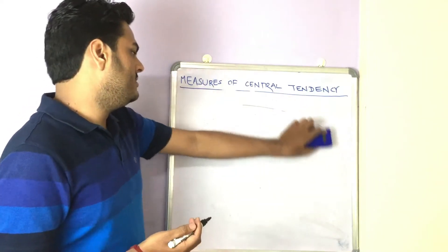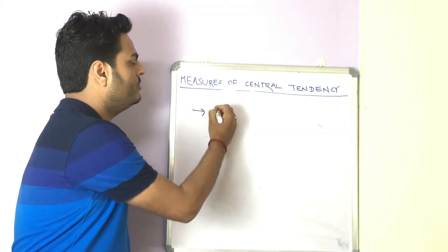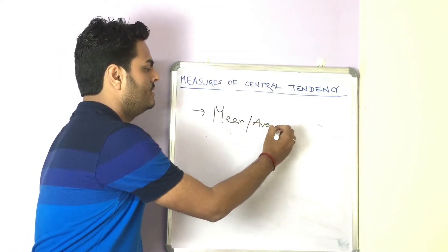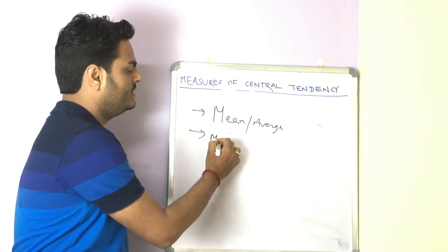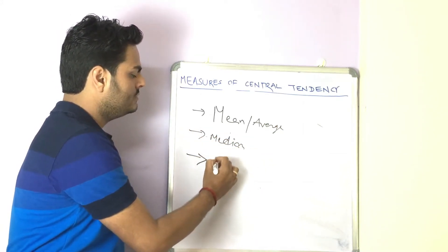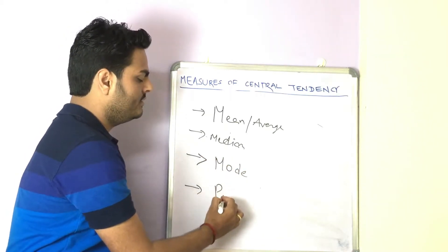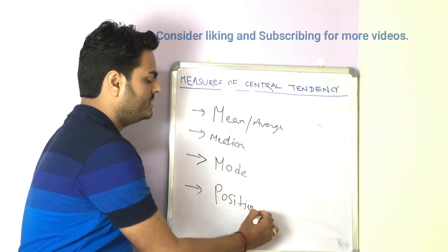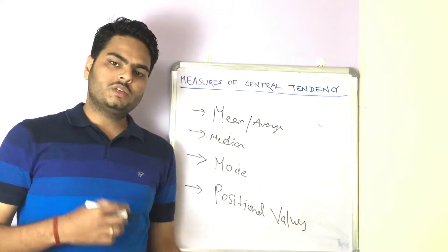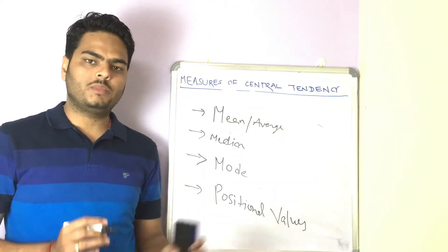In the world of stats and mathematics, measures of central tendency fall in four categories mainly: first is mean or average, second is median, third is mode, and fourth is positional value. All four are very important, but positional values is something we use a lot in the world of data science and machine learning. I'll discuss all these one by one.